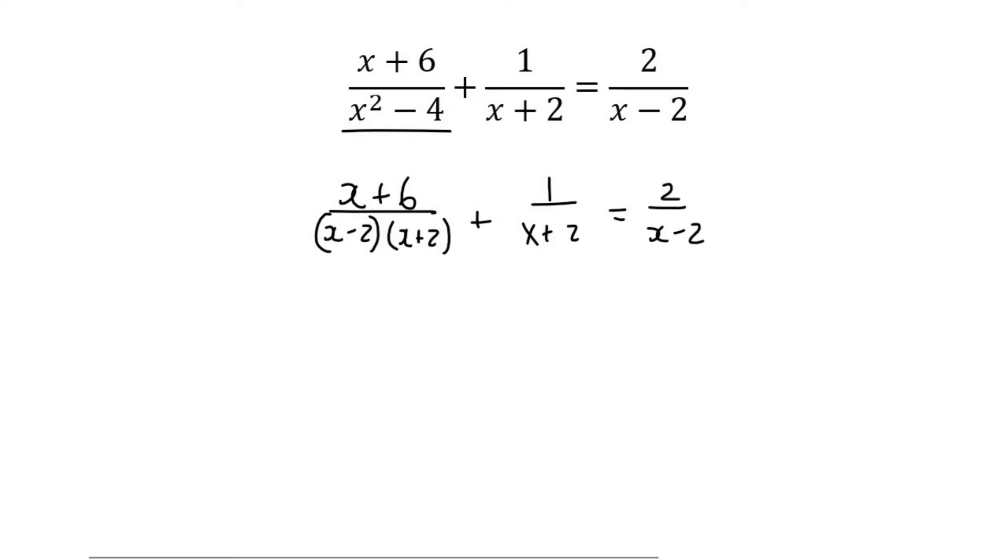It's very easy to see here that our lowest common denominator is going to be (x-2)(x+2), and from that we can get our restriction by saying that the denominator must never equal 0.